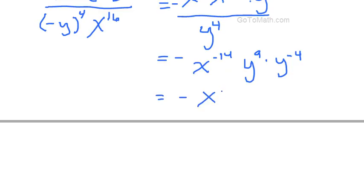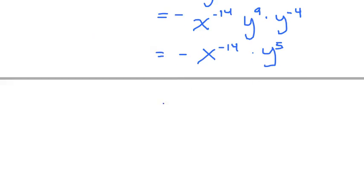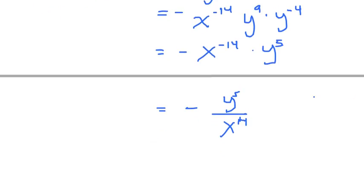So we have 2 minus 16. That's going to be x to the negative 14. And then y to the 9th. Let's just go ahead and take that other y up to the top here. We'll just go ahead and write that with the negative exponent for right now. And so this is going to end up being, what is this, 5? But we don't want to write our answer with negative exponents. So let's go ahead and do this over x to the 14th. So all that stuff reduced down to that. So we've got a negative out front, y to the 5th, and x to the 14th.